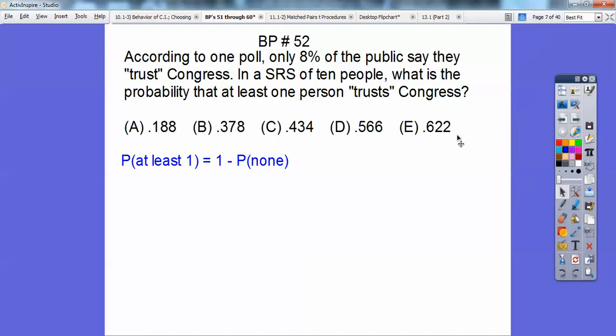And since we're doing 10 of them, it's going to be to the 10th power right there. So it's one minus 0.92 to the 10th. And you get choice D on that. Easy enough.